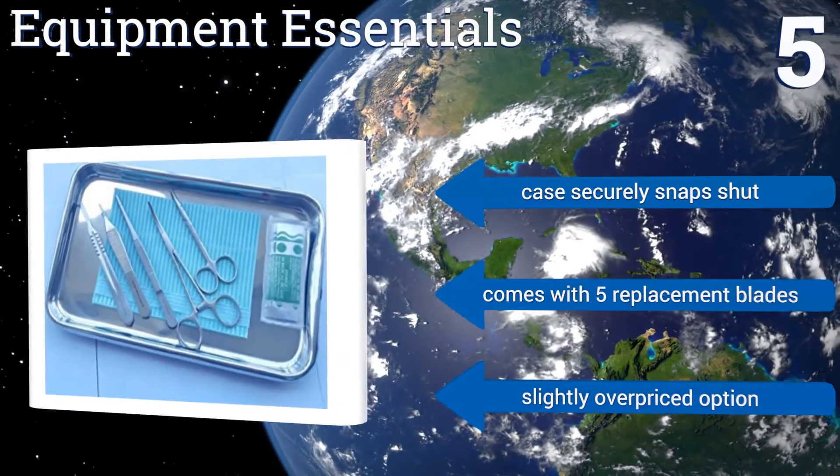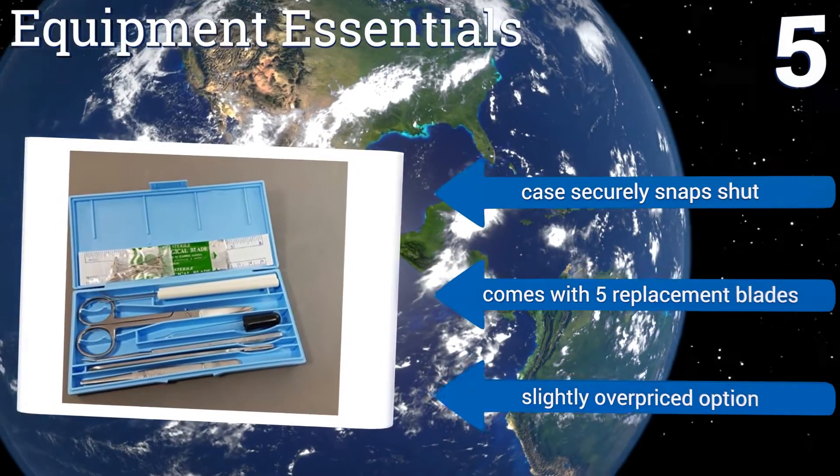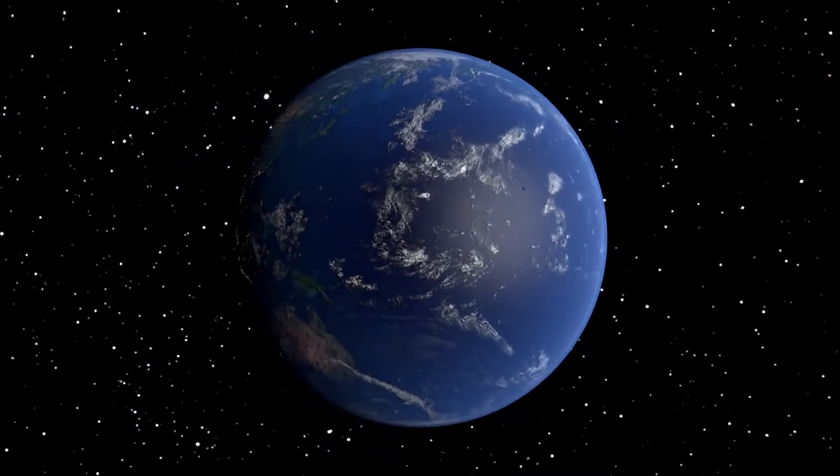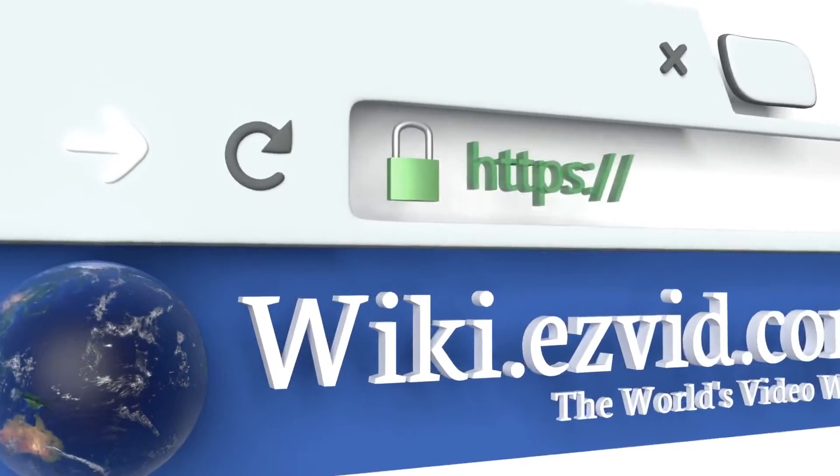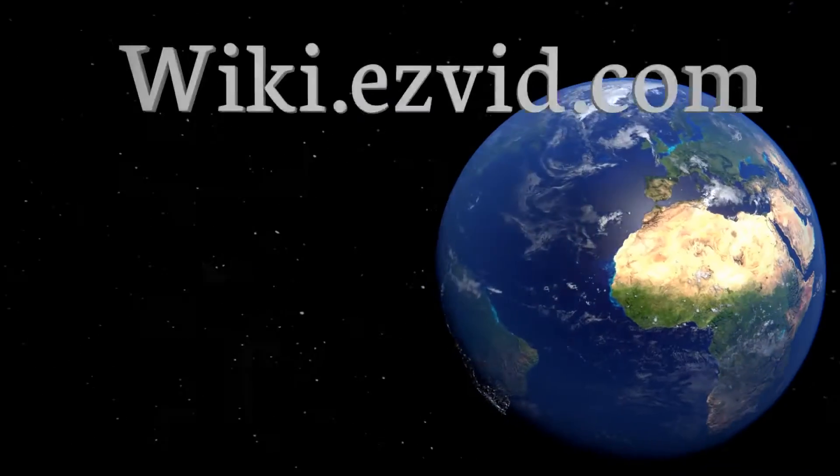The case securely snaps shut, and it comes with 5 replacement blades, but it is a slightly overpriced option. To see all of our choices, go to wiki.easyvid.com and search for lab dissection kits, or click beneath this video.